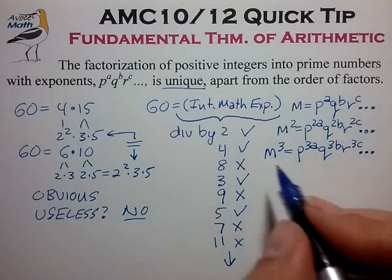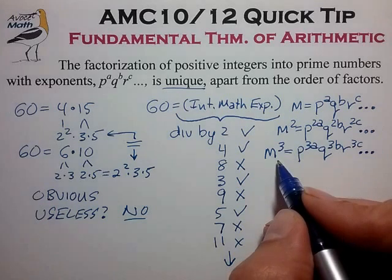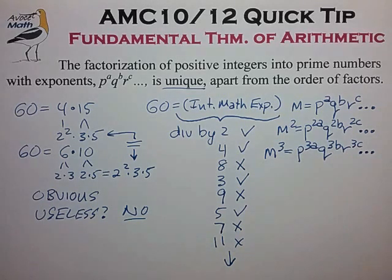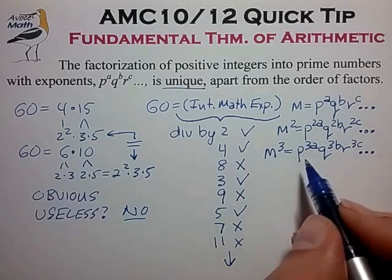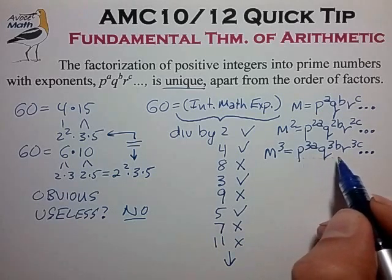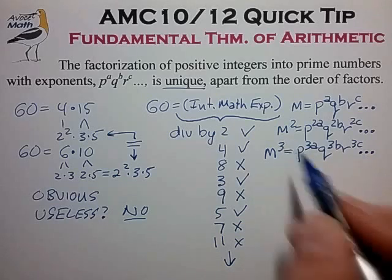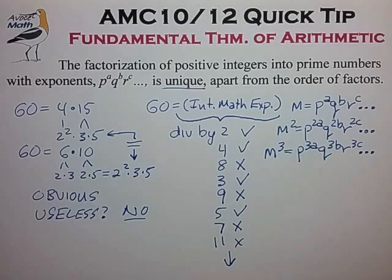So here we now see that a cube, by necessity, has to have exponents that are all multiples of 3. And conversely, if a number has a prime factorization with exponents that are all multiples of 3, we know that that's a perfect cube. So let's see how we might be able to use that.